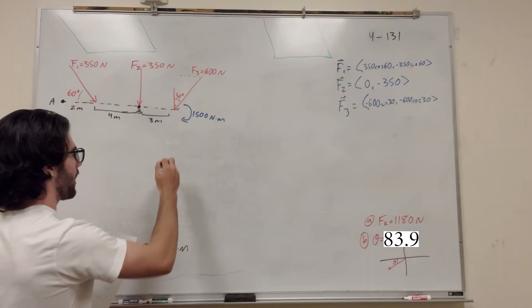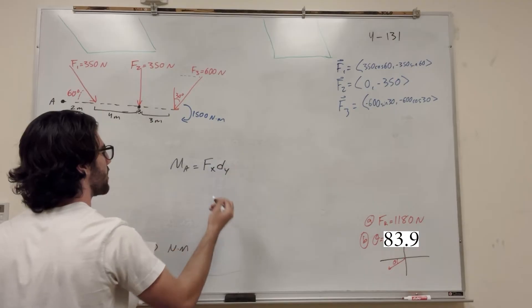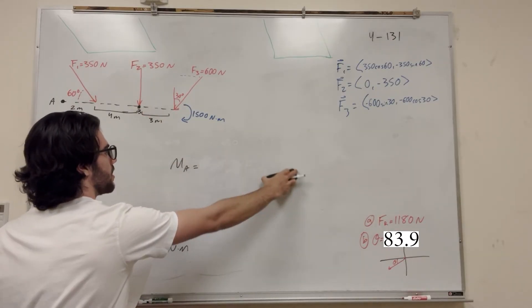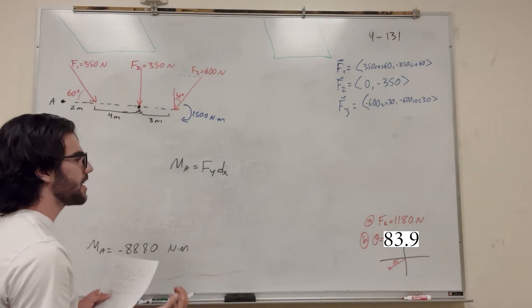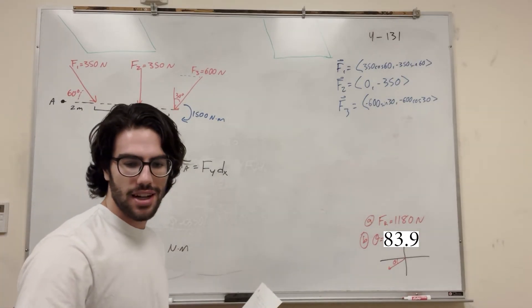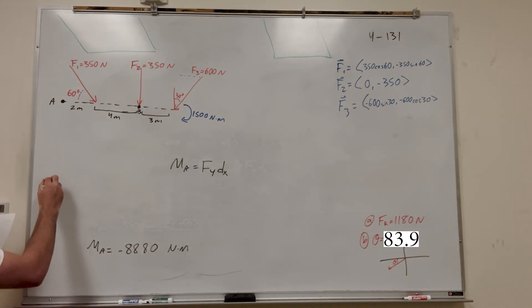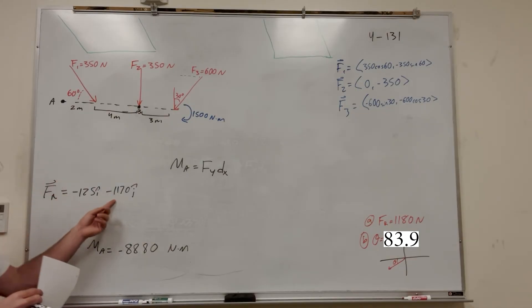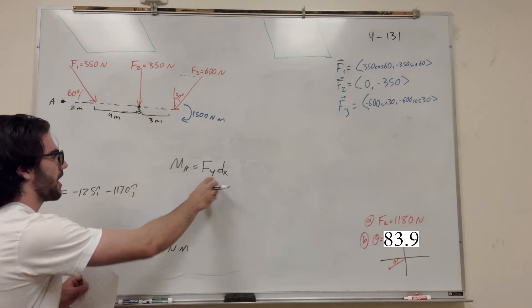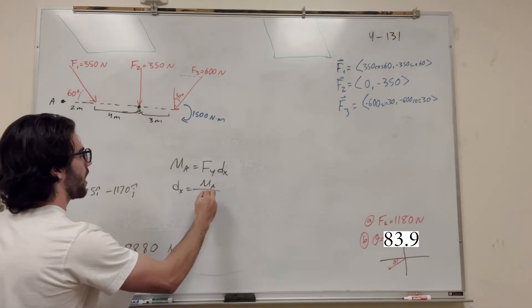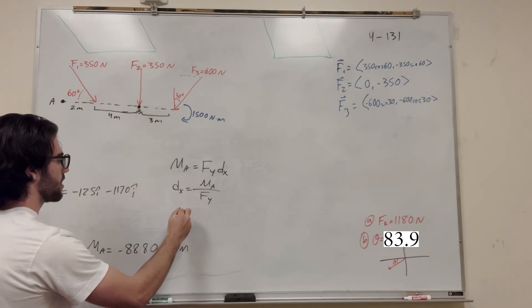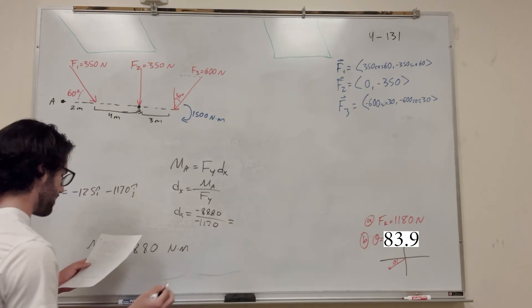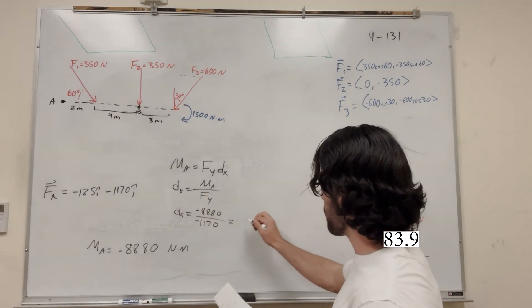Now, moment of A equals force-y times distance-x (since there's no y-distance on this flat system). So we're looking for distance x, which equals the moment of A divided by the resultant force in y. That's negative 8808 divided by negative 1170, which gives us 7.59 meters.